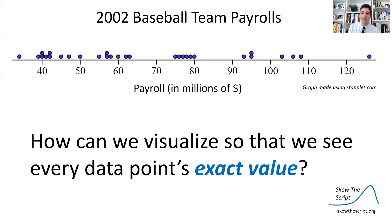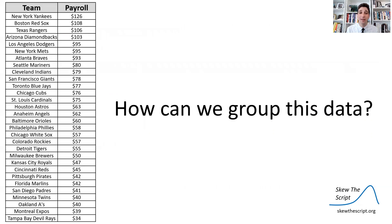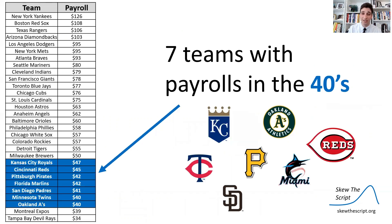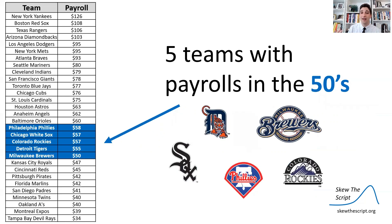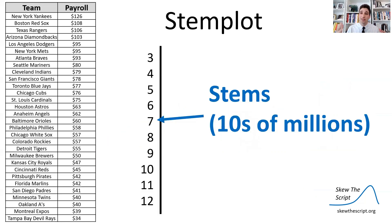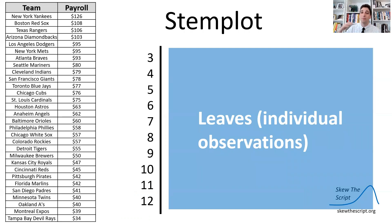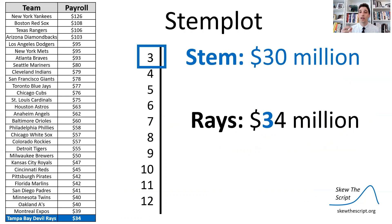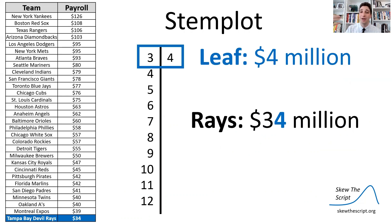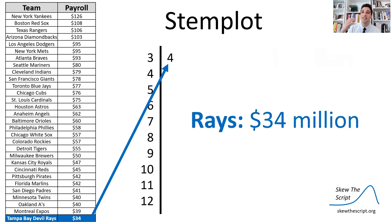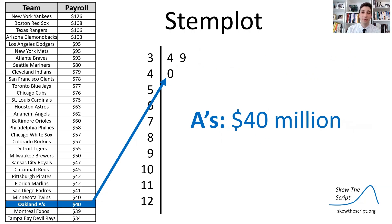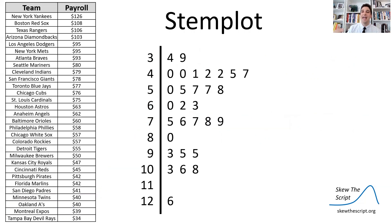To see every data point's exact value, we can use a stem plot. To make one, we group our data: there are two teams with payrolls in the $30 million range, seven teams in the $40 million range, and five teams in the $50 million range. We have stems going from $30 million all the way to $120 million, and then we make leaves — the individual observations. For example, the Tampa Bay Devil Rays paid their players $34 million, so they go in the $30 million stem with a leaf of 4. The Montreal Expos paid $39 million, so they get the 9 on the 30 stem. The A's and the Twins both paid $40 million, so they go on the 40 stem. We fill this out for the rest of the data.